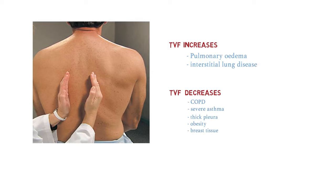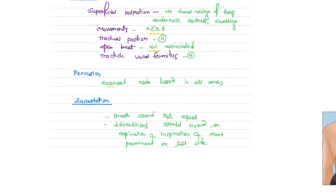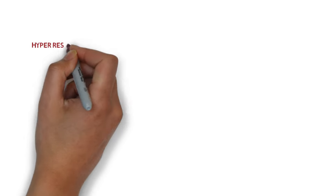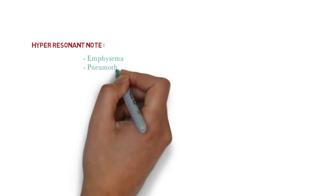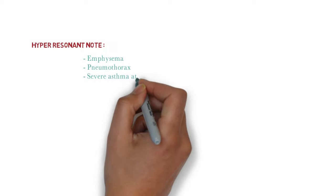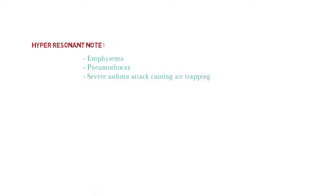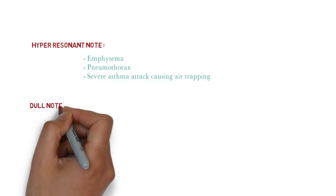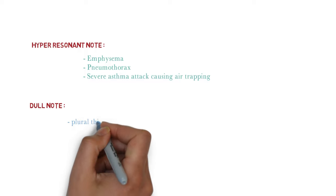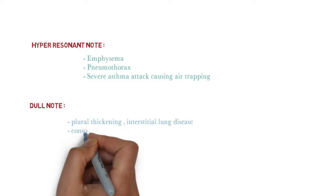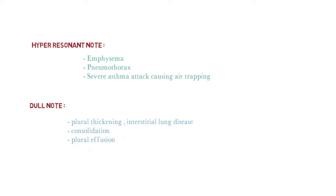Percussion: resonant note heard in all areas in my patient. Hyper-resonant note is seen in emphysema, pneumothorax, and severe asthma attacks due to air trapping. Dull note can be seen in pleural thickening, interstitial lung diseases, consolidation, and pleural effusion. In pleural effusion you see a stony dull note; in consolidation, a woody dull note. Always mention these distinctions.